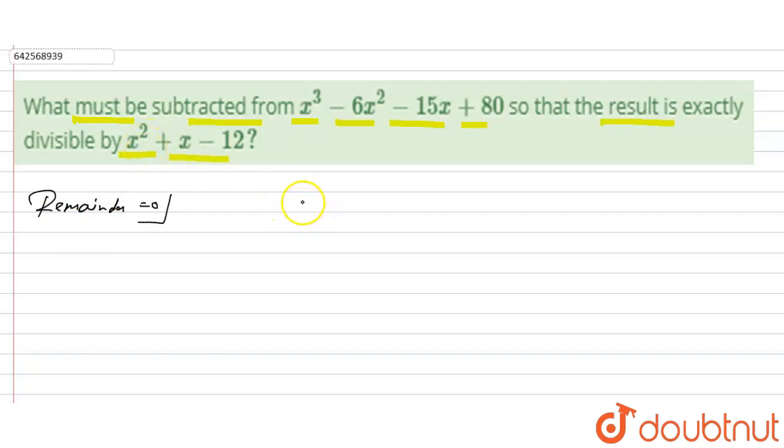So x³ - 6x² - 15x + 80 is divided by x² + x - 12. Now we have to find the remainder. We have to eliminate the highest power, so this would be multiplied with x. This is x³ + x² - 12x. Now subtract it, so this is minus, minus, and plus. This is canceled out and this would be -7x², and this would be +12x, and this is minus, so this would be -3x + 80.